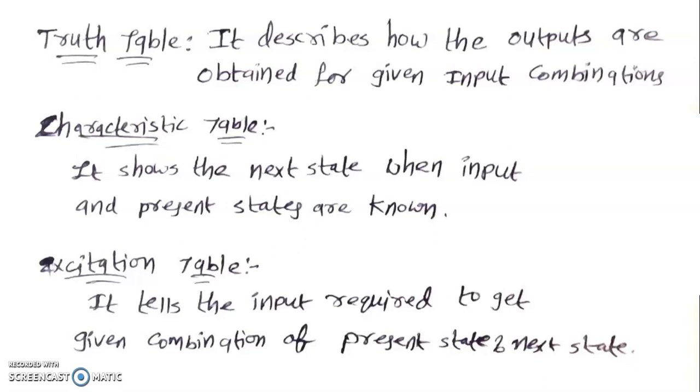Now, to change from 0 to 1 output, what is the input I have to apply for the circuit? That will be obtained from the excitation table. That is, the excitation table gives the information that, to get the combination of this present state and this next state, what are the inputs you have to apply.